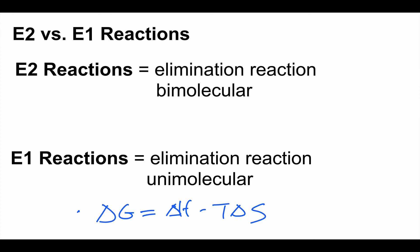A typical substitution reaction follows A + B → C + D — you end up with roughly the same number of molecules. In elimination reactions, it's more like A → B + C: one thing becomes two things, which is an increase in entropy. If you want to take advantage of that, raise your temperature — you get a larger entropic contribution to ΔG, making elimination more favorable as a spontaneous reaction.